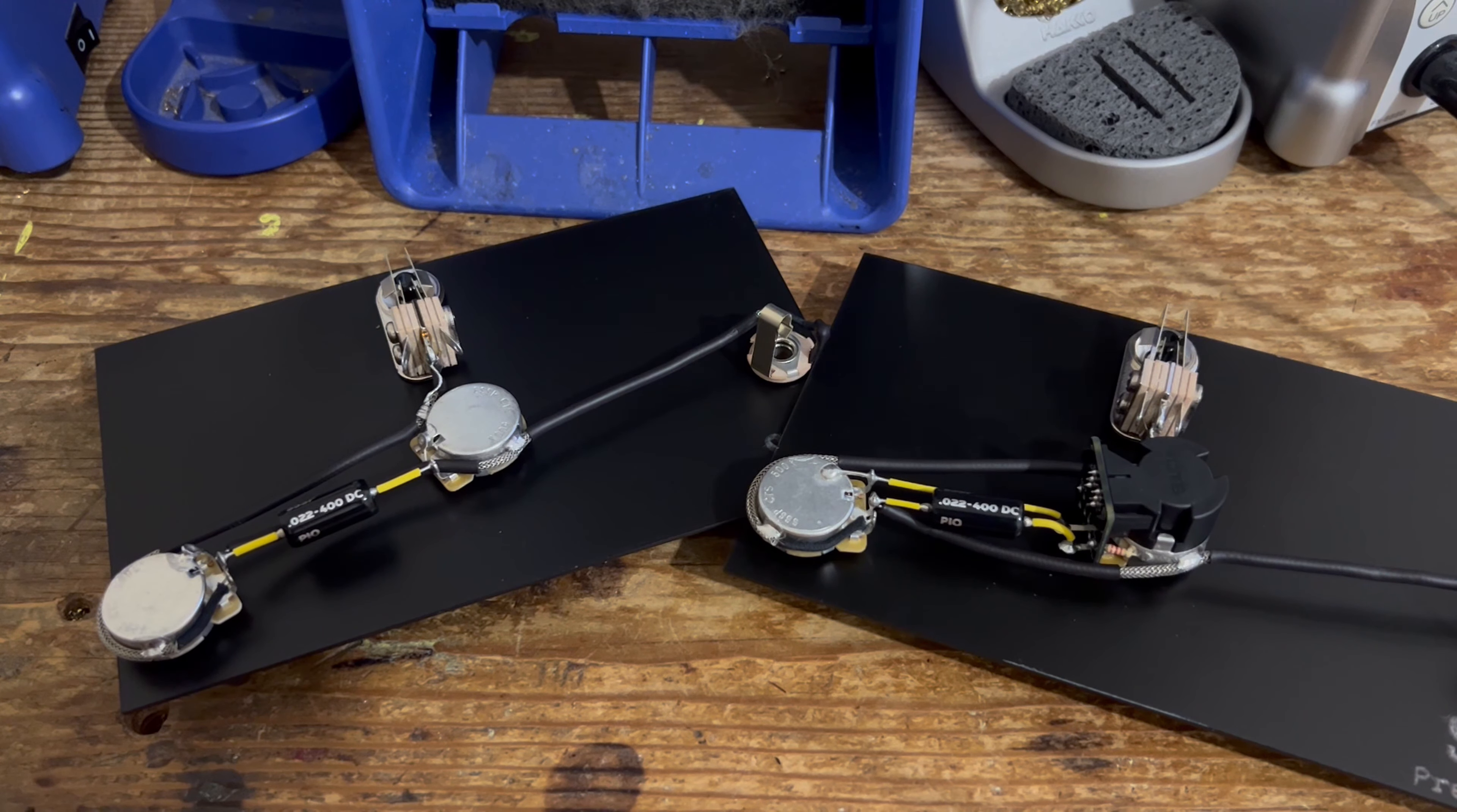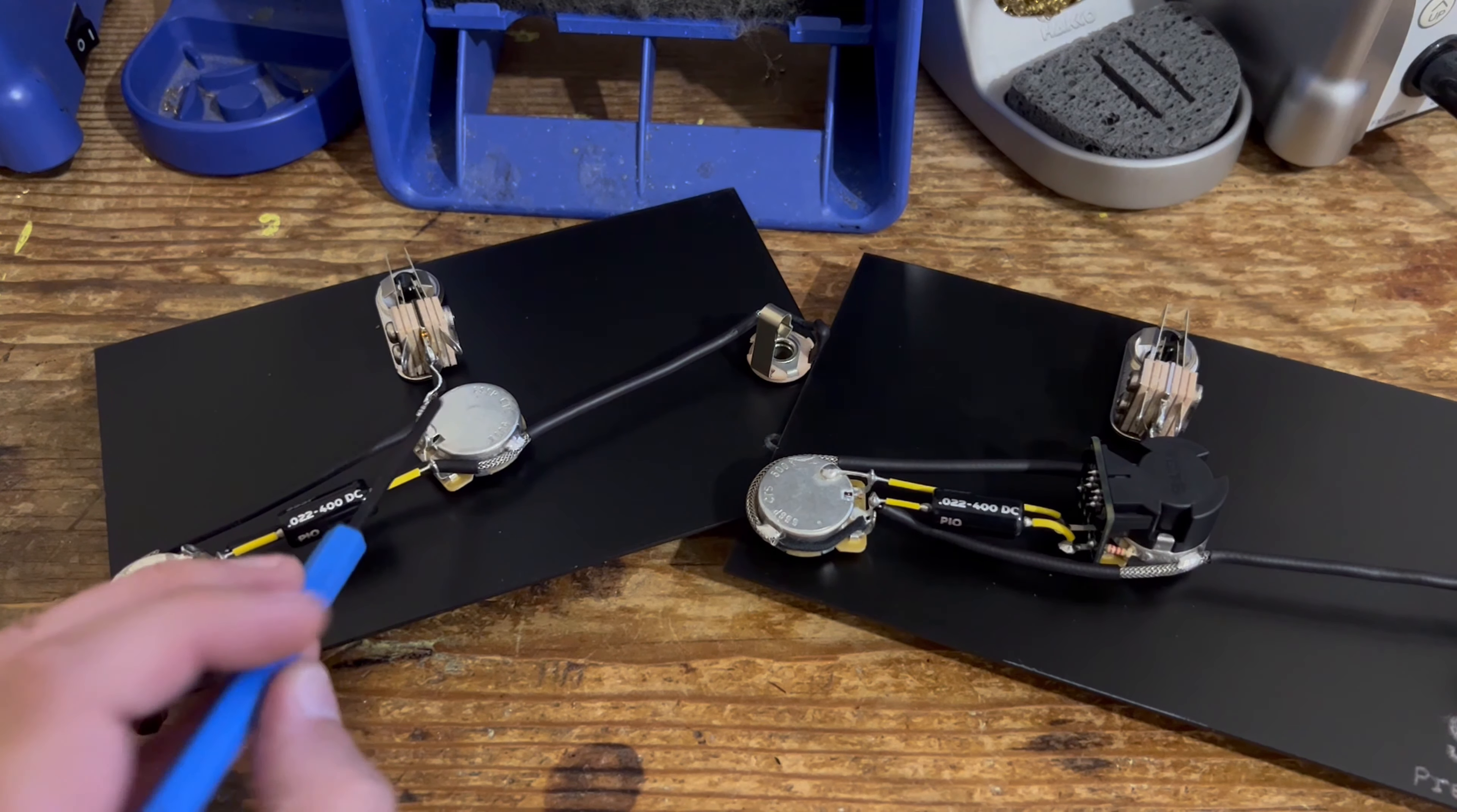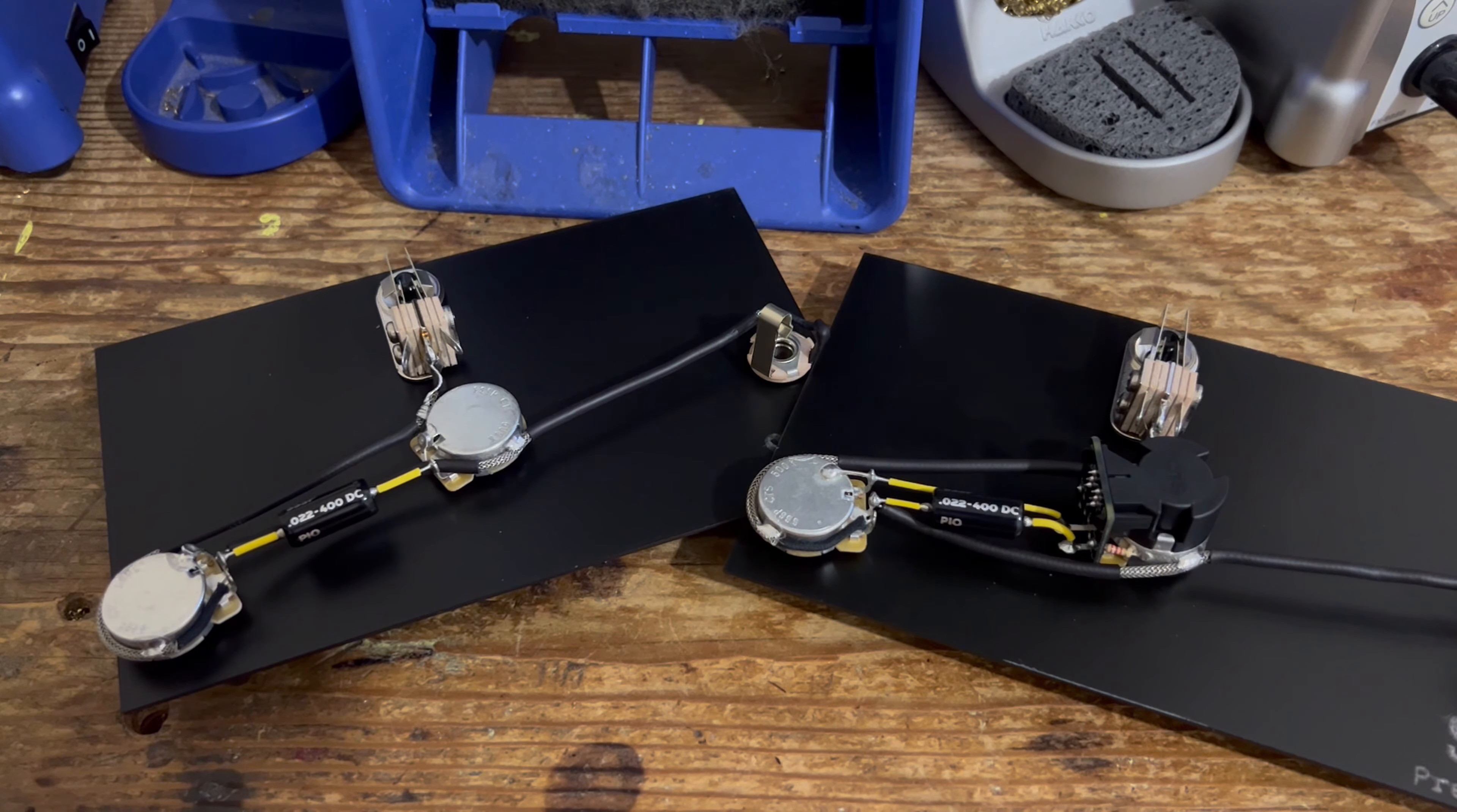In our last video, we covered a simple one volume, one tone, three way toggle switch setup for a dual humbucker guitar. We essentially used a PRS style template, but the circuit can be replicated for any guitar that's using the same setup.